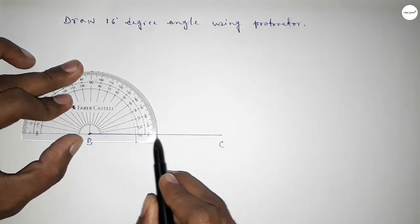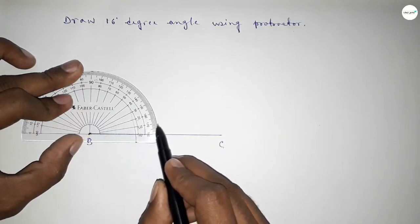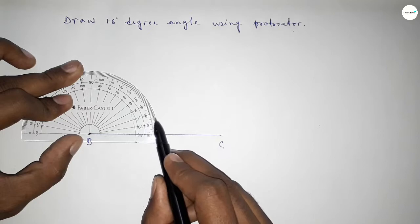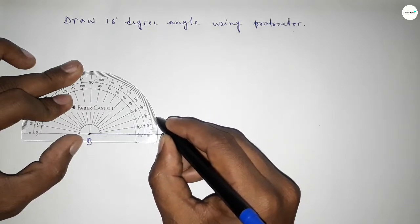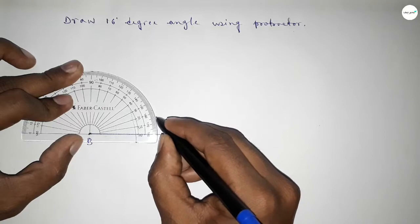So this starting 0, 1, 2, 3, 4, 5, 6, 7, 8, 9, 10, 11, 12, 13, 14, 15, 16. So this is 16 degrees.